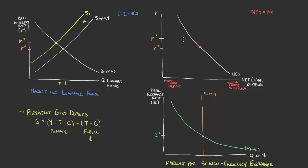The demand is our investment plus our net capital outflow — our domestic investment and our foreign investment — on the demand side. Nothing is changing on the net capital outflow line. So what would we do? We would just move to this new point here — we would move to a lower net capital outflow, given a higher real interest rate.